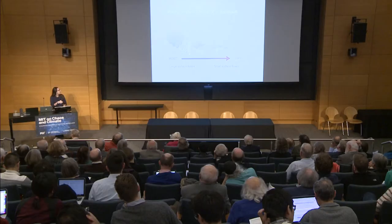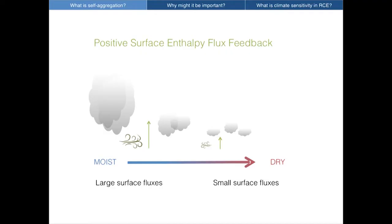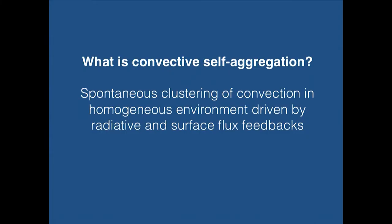Another feedback mechanism involves interactions with surface fluxes. One of the factors controlling the flux of enthalpy from the sea surface to the atmosphere is surface wind speeds. In our moist regions with more convection, we have stronger surface winds due to convective gustiness and stronger large-scale circulations, compared to the dry, non-convective regions where those are smaller. This causes larger surface fluxes in the moist convecting regions — an extra source of energy for those columns and more favorable for convection. So convective self-aggregation is this spontaneous clustering of convection in a homogeneous environment, driven by radiative and surface flux feedbacks and their interaction with convection.